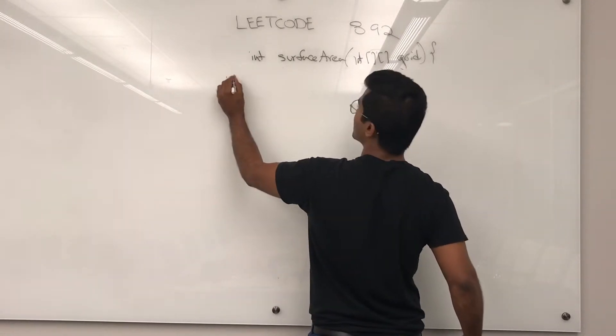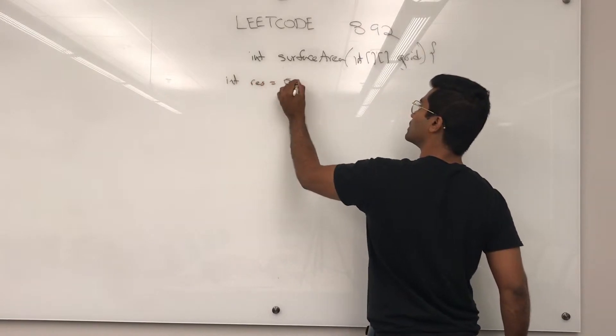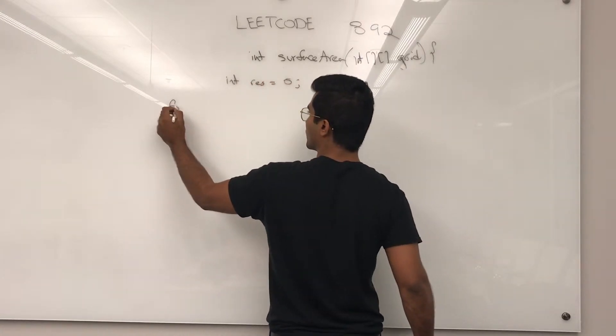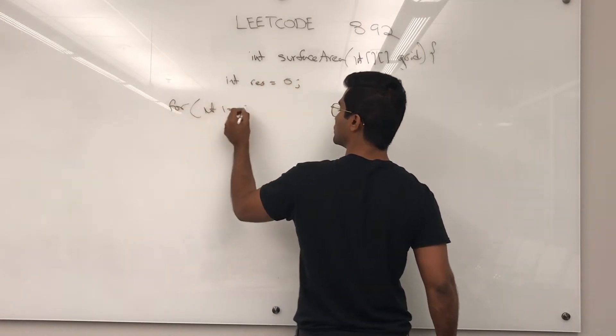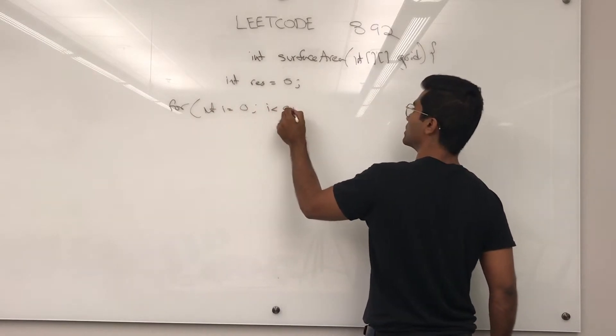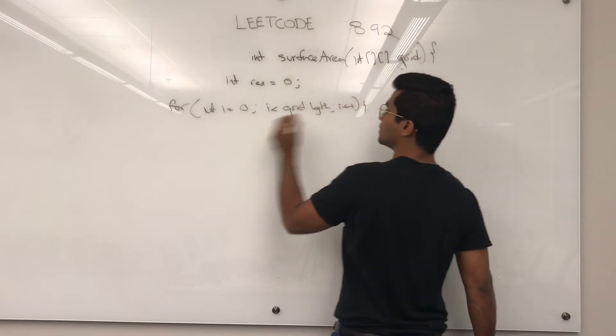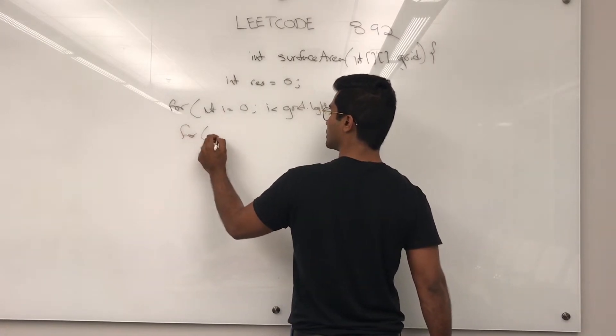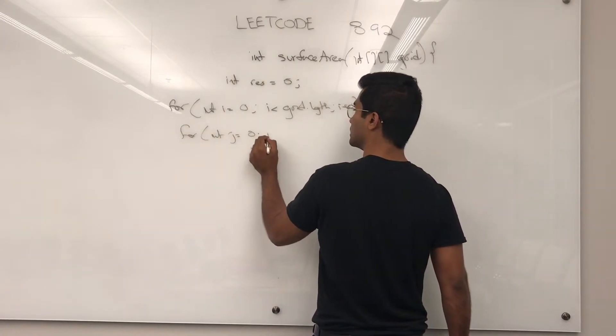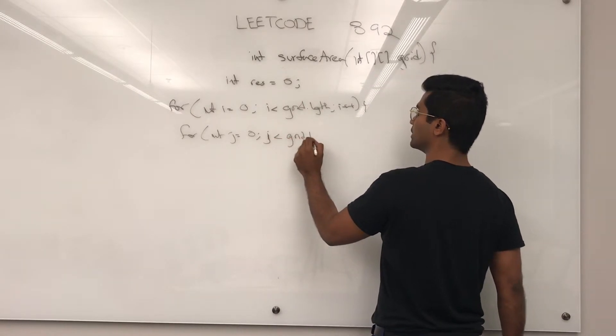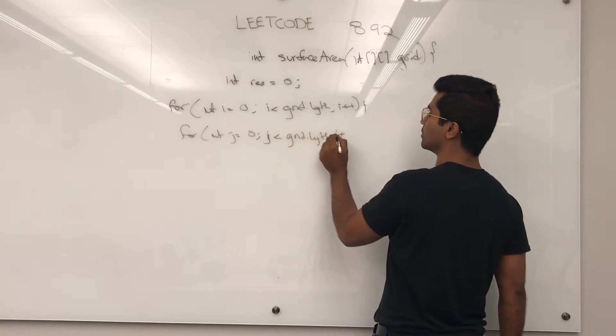Next, we're going to initialize a result, which is what the answer wants, and we're going to go through the 2D grid. For int i equals 0, i is less than grid.length, and then i++, and then for int j equals 0, j is less than grid.length. We can do that because this is an n-by-n grid.